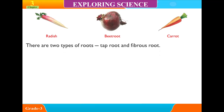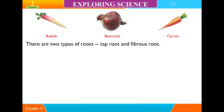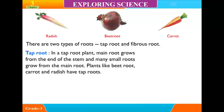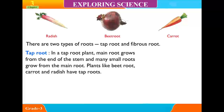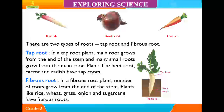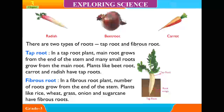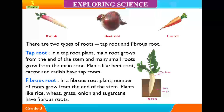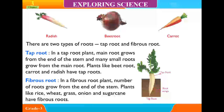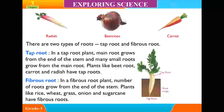There are two types of roots: taproot and fibrous root. In a taproot plant, the main root grows from the end of the stem and many small roots grow from the main root. Plants like beetroot, carrot and radish have taproots. In a fibrous root plant, a number of roots grow from the end of the stem. Plants like rice, wheat, grass, onion and sugarcane have fibrous roots.